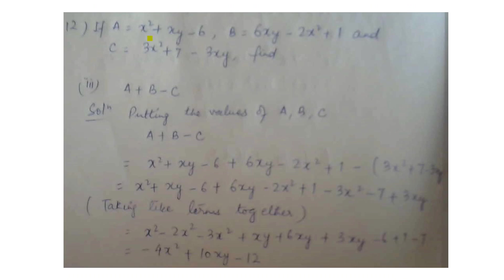Question 12: if a is equal to x square plus xy minus 6, b is equal to 6xy minus 2x square plus 1, and c is equal to 3x square plus 7 minus 3xy, find the value of subpart 3: a plus b minus c. It is very simple — substitute the values of a, b, and c with the proper signs. Putting the values: x square plus xy minus 6, plus 6xy minus 2x square plus 1, minus in the bracket 3x square plus 7 minus 3xy. Taking all like terms together, the answer is minus 4x square plus 10xy minus 12.